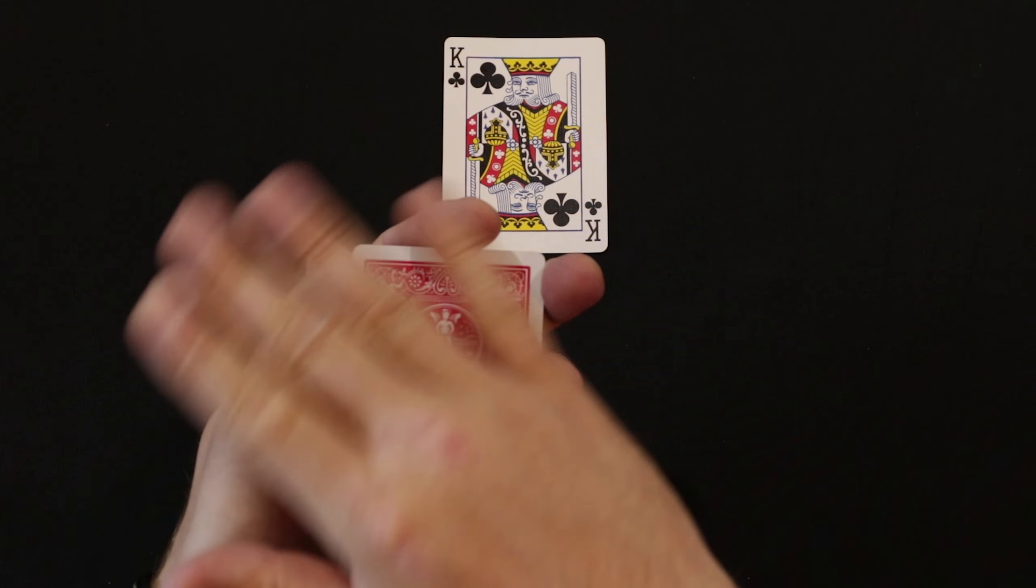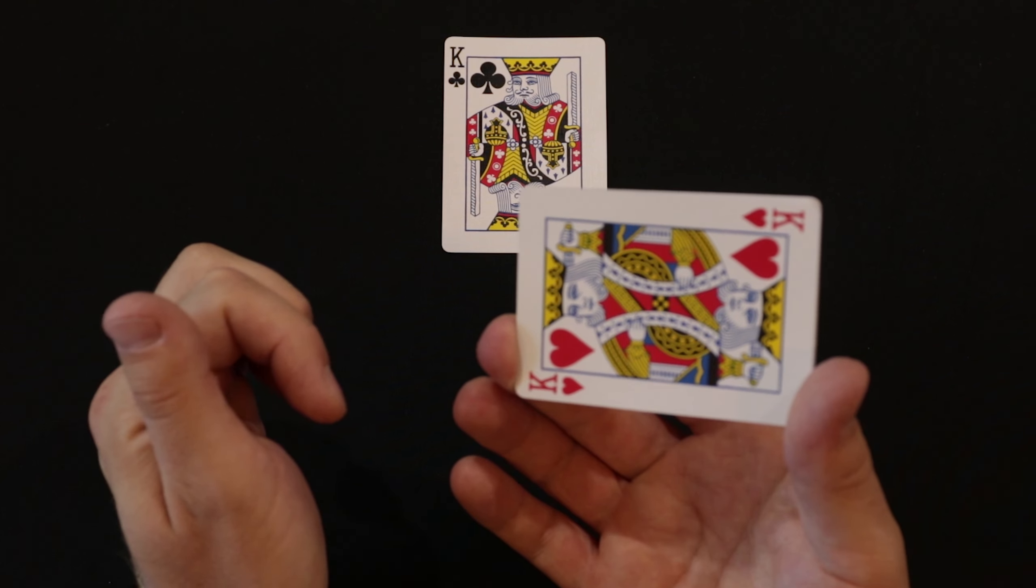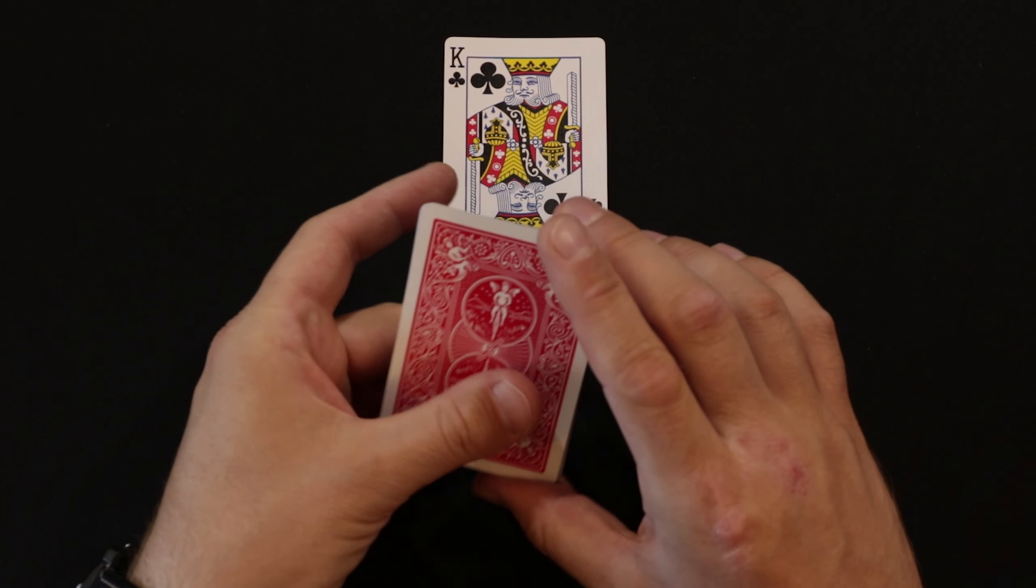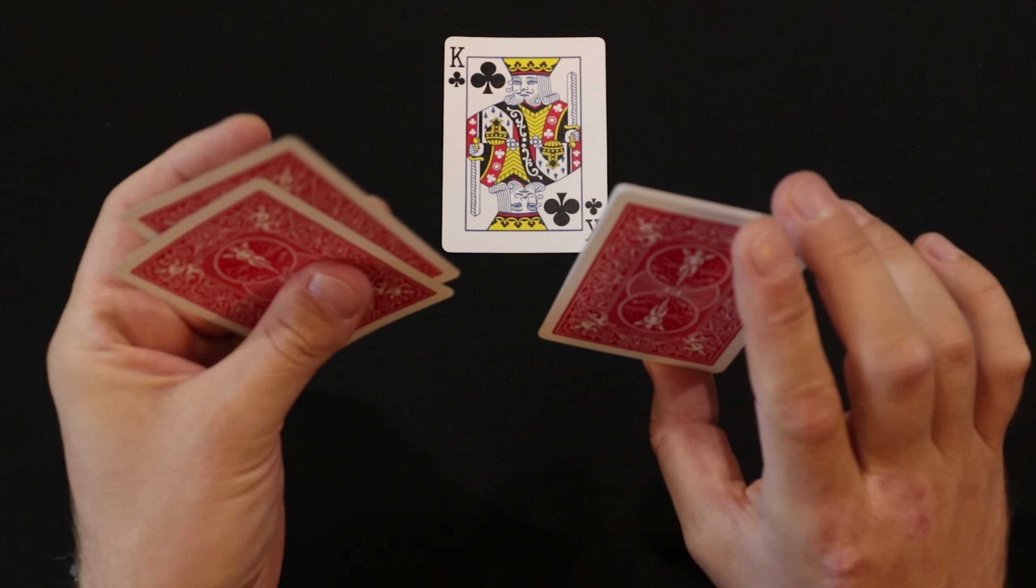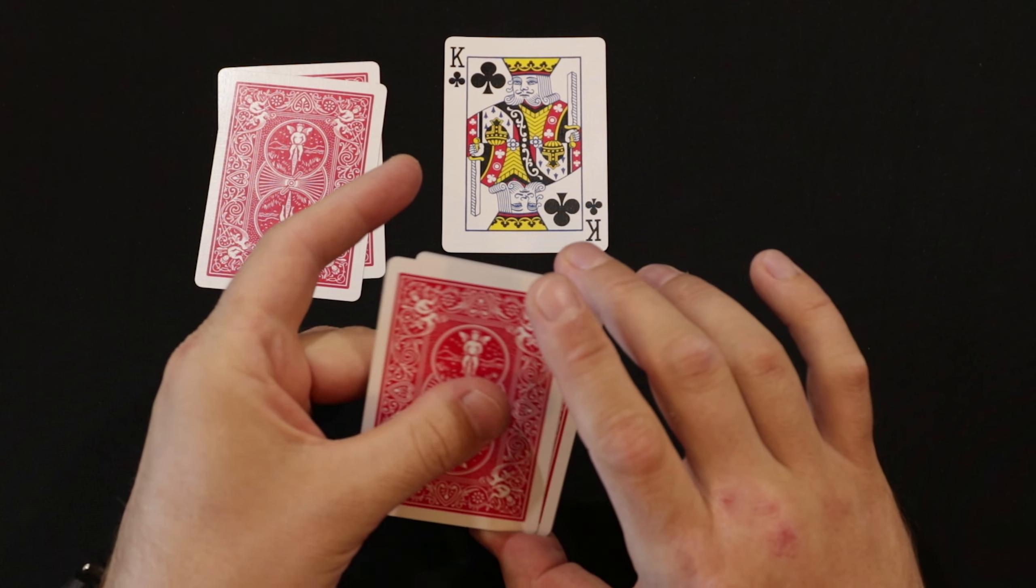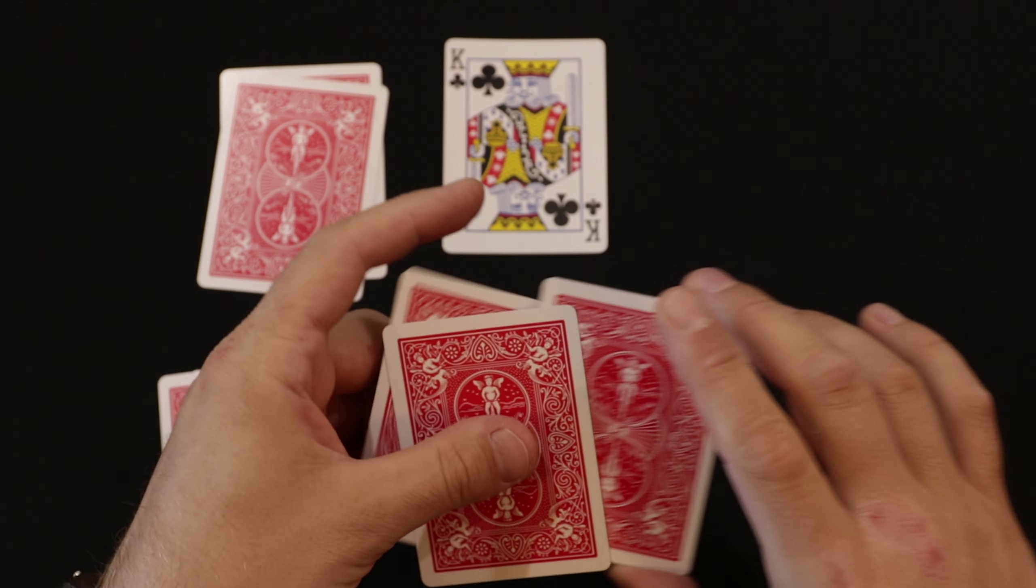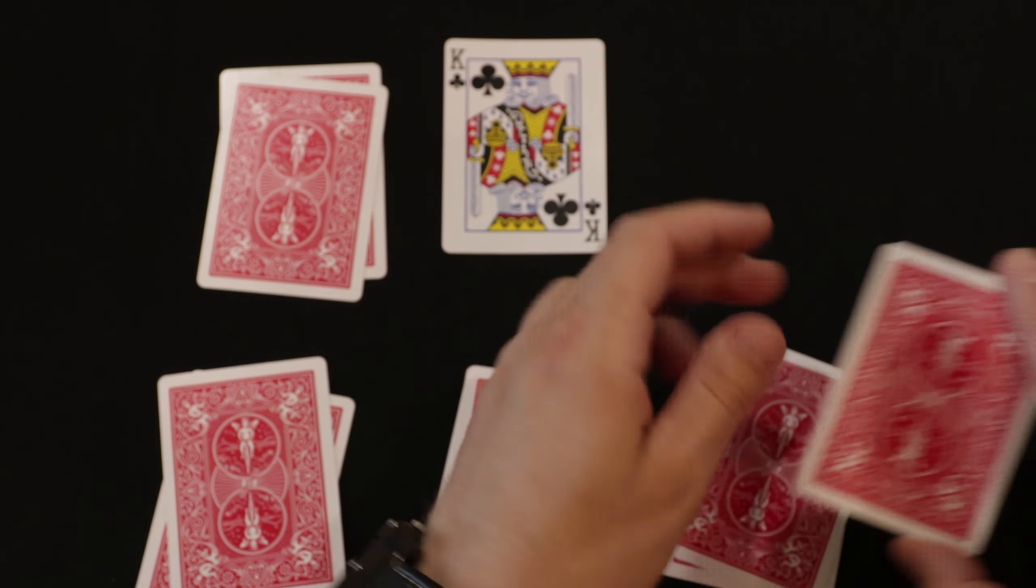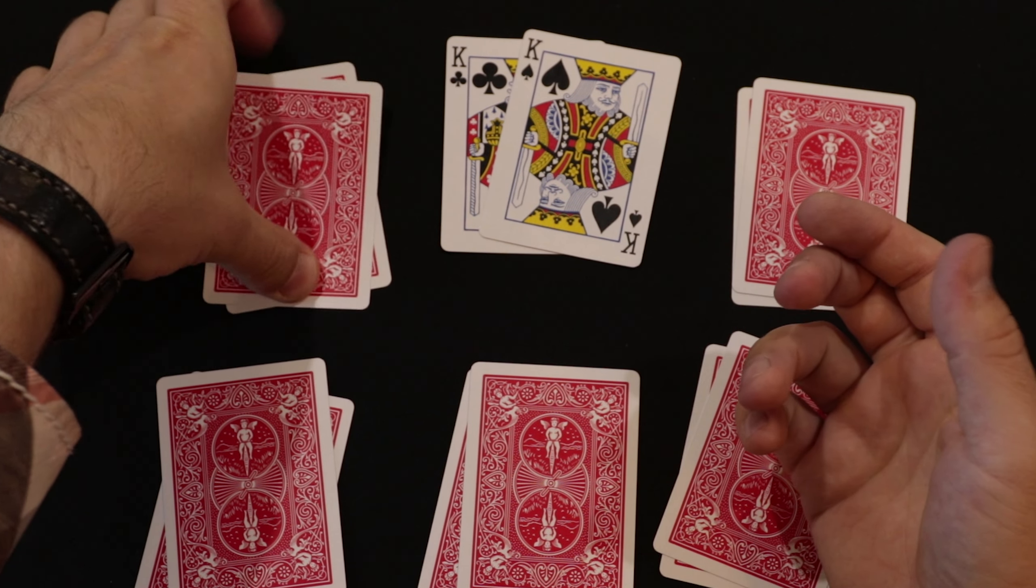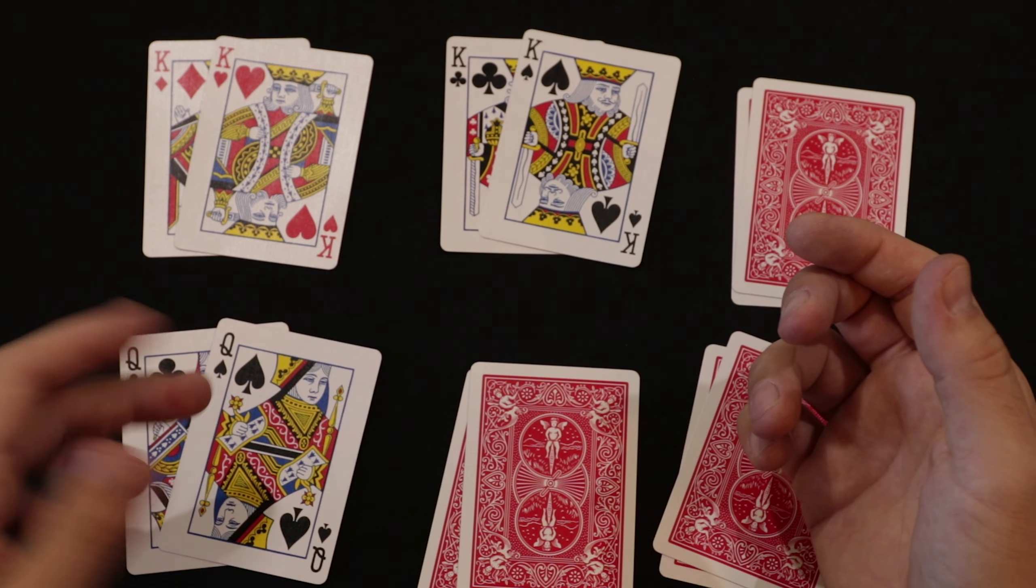Now pinch this pile between your thumb and middle finger. With the other hand, start pulling off the top and bottom cards and put them aside separately. The remaining card is the second black King. Now turn over all the cards and everyone will be surprised that all the cards have found their pair.